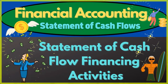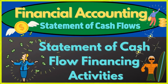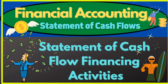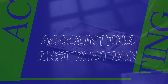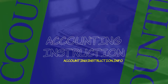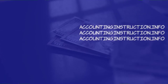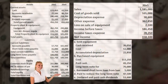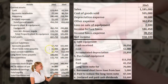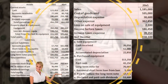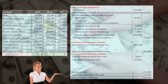In this presentation we will continue with the statement of cash flows financing activities, taking a look at cash received from issuing stock. We're going to be using the comparative balance sheet, income statement, and additional information — focusing on the comparative balance sheet to make this worksheet.